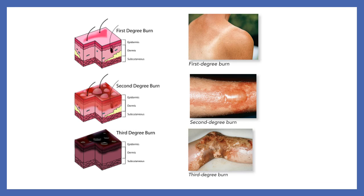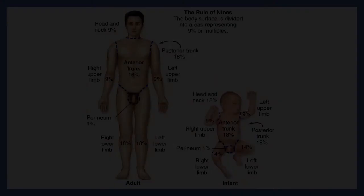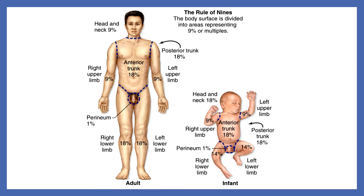We use the rule of nines to assess burn severity. The body is divided into areas of nine percent or multiples of nine — for example, the whole left leg is 18%, one arm is about 9%. In children, the percentages differ slightly. This classification helps guide treatment. When a burn covers a large enough area, skin grafting — taking skin from a healthy part of the body and grafting it where the epidermis and dermis were destroyed — may be necessary.